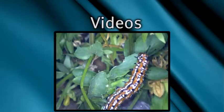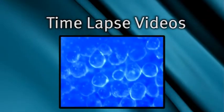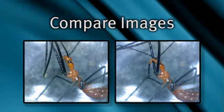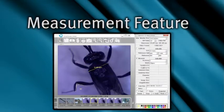With the SmartScope 5M, you can not only take still photos, but you can record videos, record time lapse videos, compare two images side by side, and there's even a measurement feature.